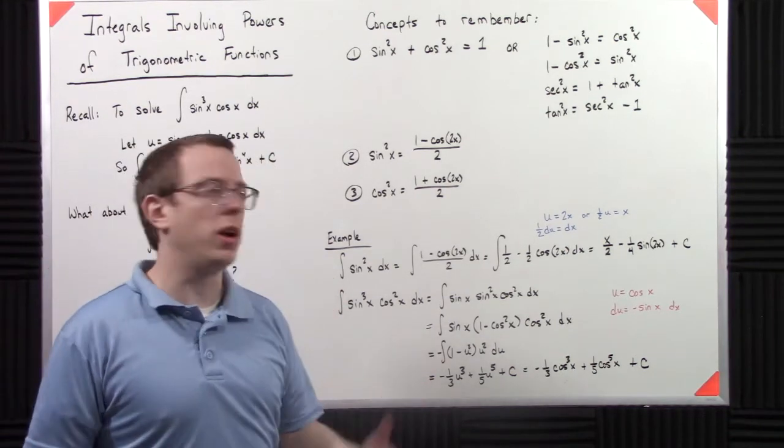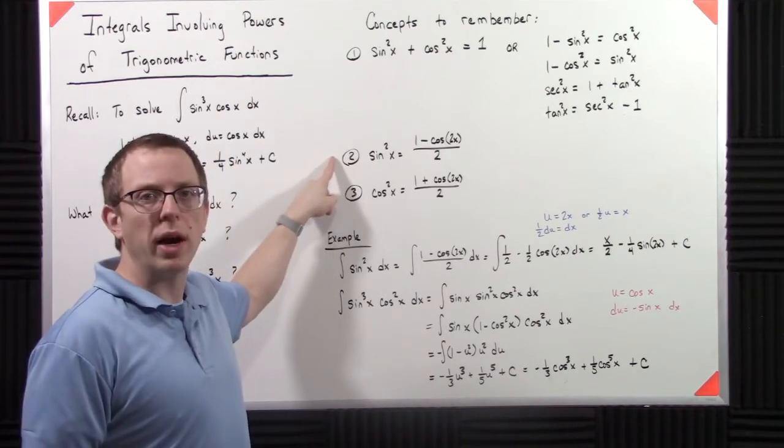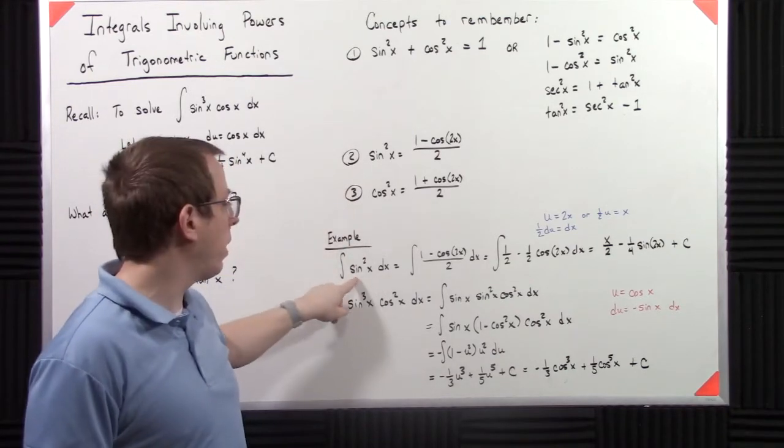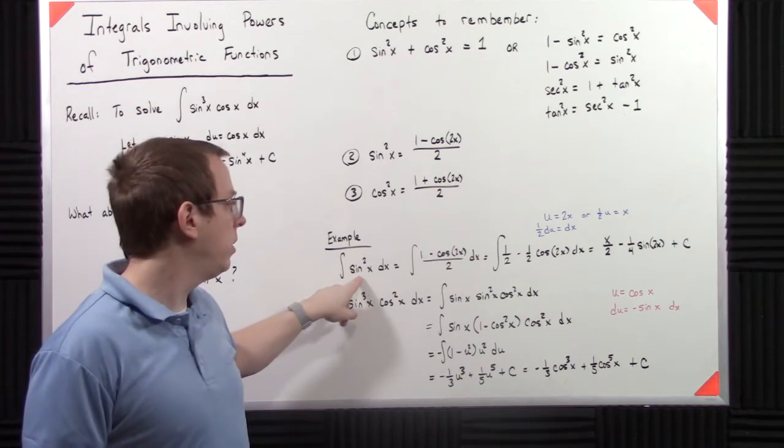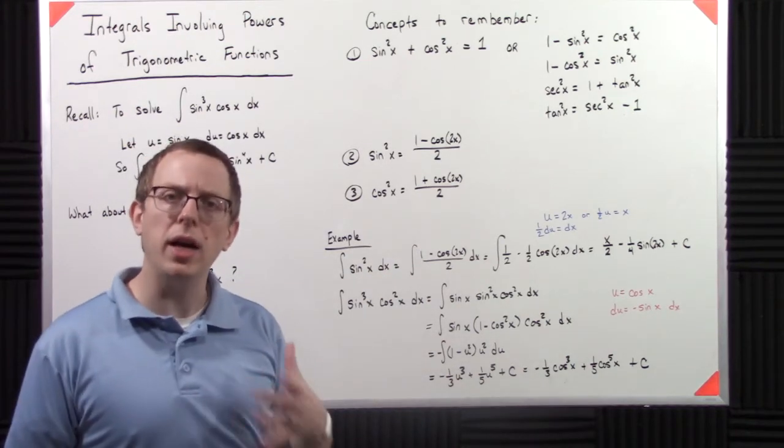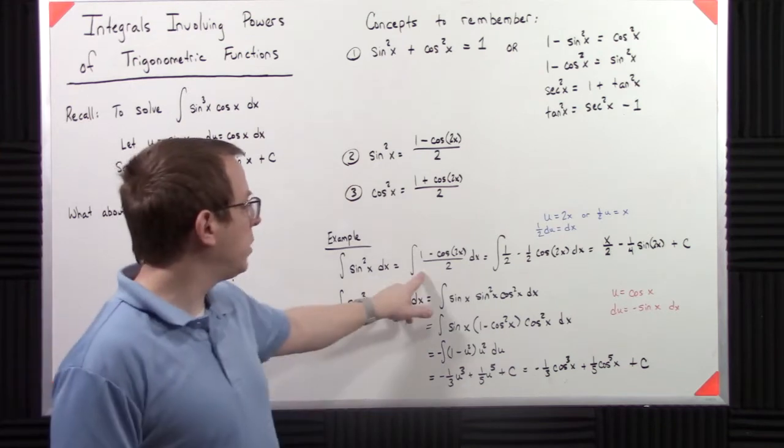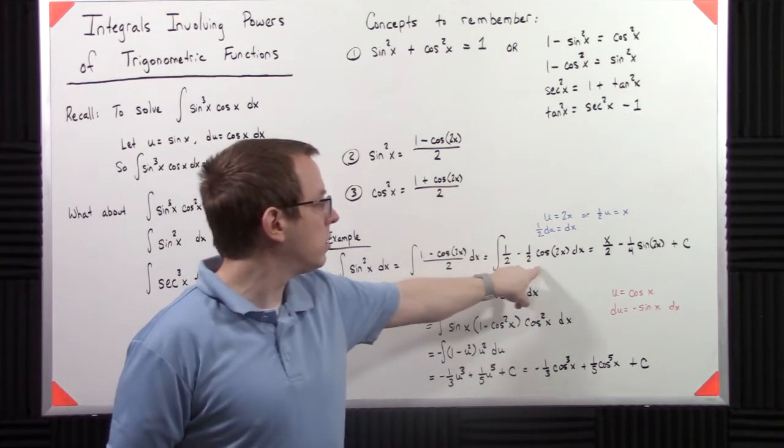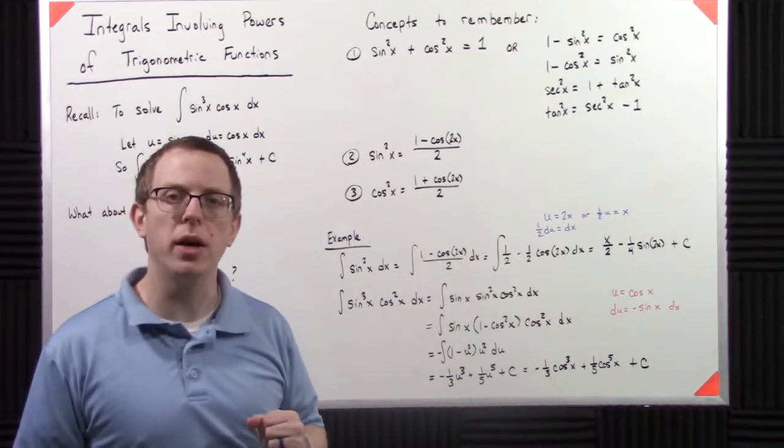The first one is just that sine squared x. Well, if I look, that's a direct identity. I say, okay, well sine squared x is not great, but 1 minus cosine of 2x over 2. Okay, I think I can deal with this because I can split that into 1 half minus 1 half times cosine of 2x.